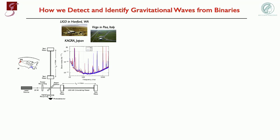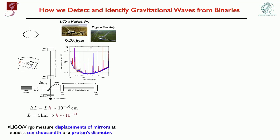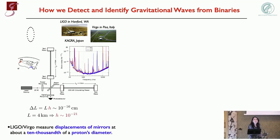Let me briefly say how we detect gravitational waves. We use the way in which gravitational waves interact with freely falling bodies — like a ring of particles — and we use interferometers where the free particles are the mirrors hung by wires at the extremity of the optical cavities, free to move above a few hertz. Here you see the picture of the LIGO detector in the US, Virgo just outside Pisa, and we also have a Japanese detector called KAGRA. We monitor the displacement of the mirrors put in motion by the gravitational wave passing by, at the level of ten-thousandths of a proton diameter, because this is what we need to measure the extremely weak amplitude of the gravitational waves.